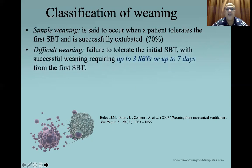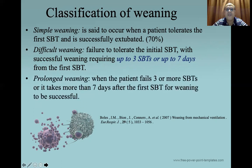Difficult weaning is failure to tolerate the initial spontaneous breathing trial, but the patient is successfully weaned, requiring up to three other spontaneous breathing trials or up to seven days from the first failed spontaneous breathing trial. Prolonged weaning is when the patient fails three or more spontaneous breathing trials, or it takes more than seven days after the first failed trial to wean them successfully from mechanical ventilation.